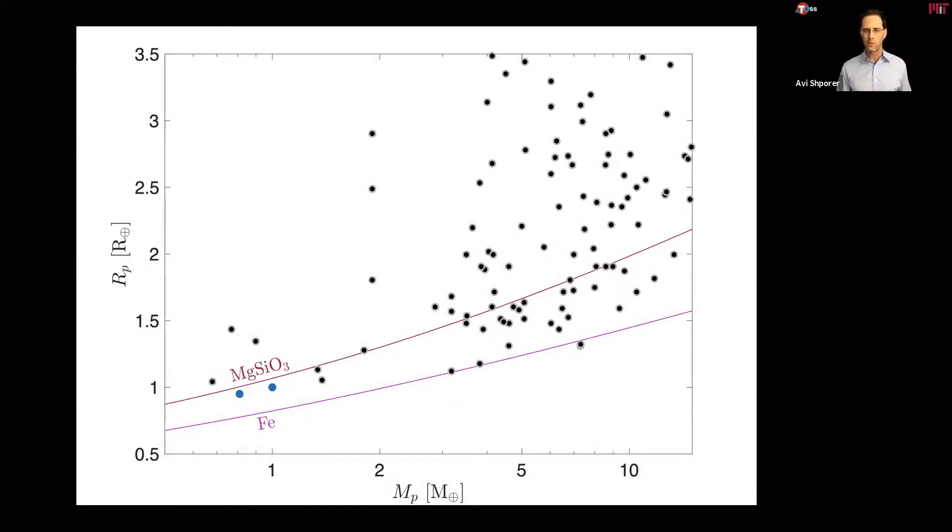but to see the contribution of TESS to the exoplanet field, we need to look at the radius mass diagram. So we have the planet radius in Earth radii in linear scale on the y-axis versus the planet mass in Earth masses in log scale on the x-axis. And for reference, we have Earth and Venus in blue. And the solid lines are lines of composition dominated by silicates in brown and iron in purple. So not surprisingly, Earth and Venus are between those two lines.